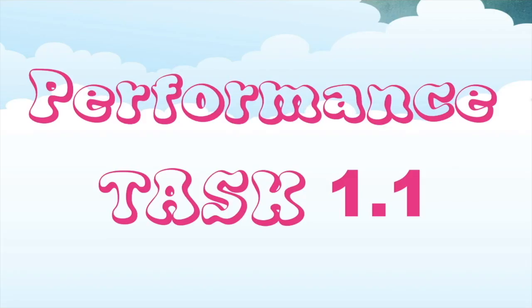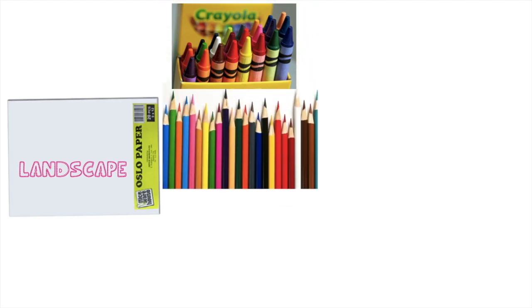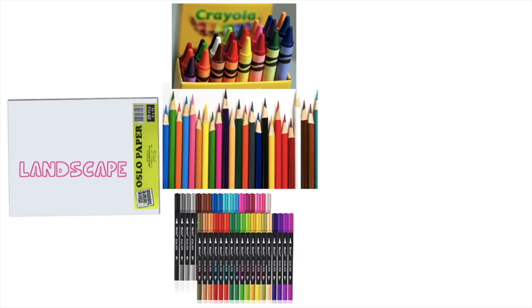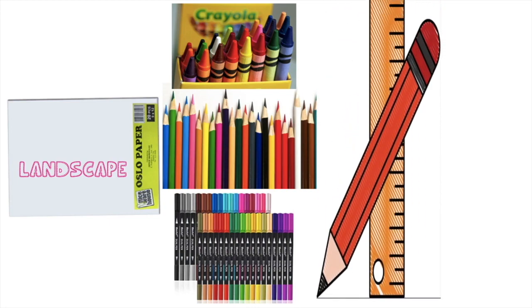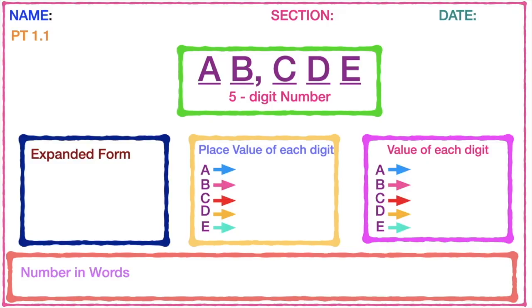We're going to have our Performance Task 1.1. Let's check your materials first. You're going to use your Oslo paper in landscape orientation, then your crayons, colored pencils, or colored pens. After that, you're also going to use your ruler and pencil.